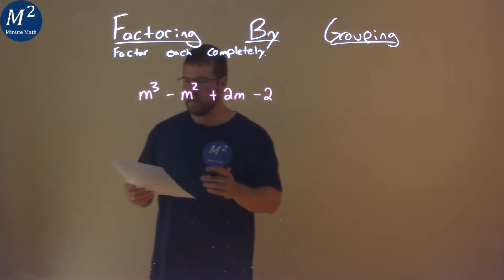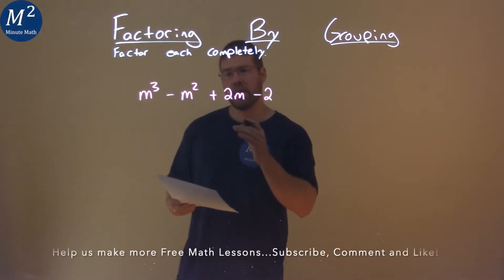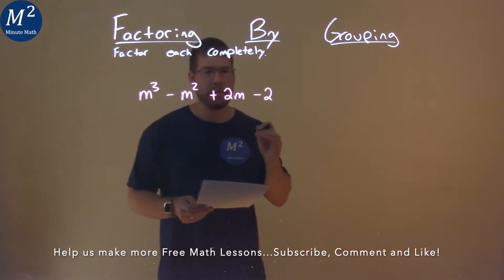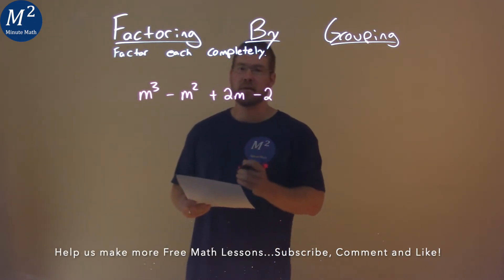We're given this problem right here, m to the third power minus m squared plus 2m minus 2, and we need to factor this completely.